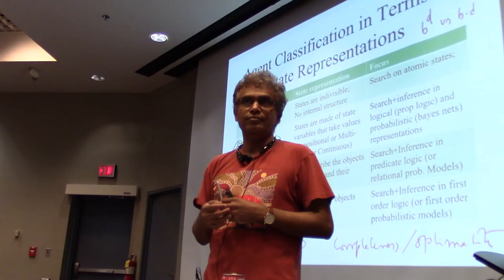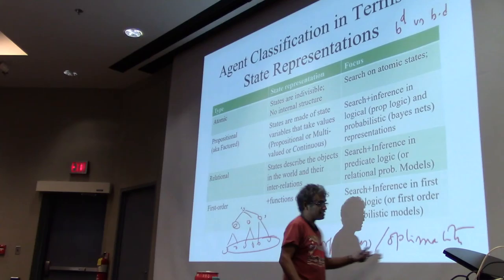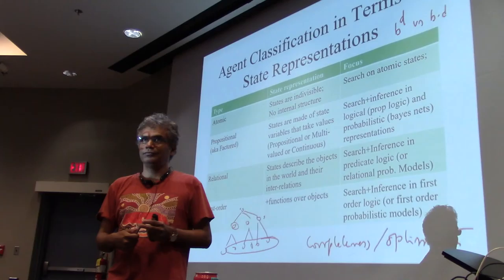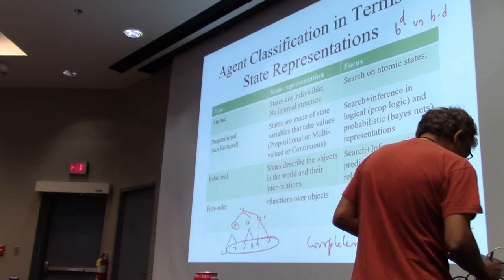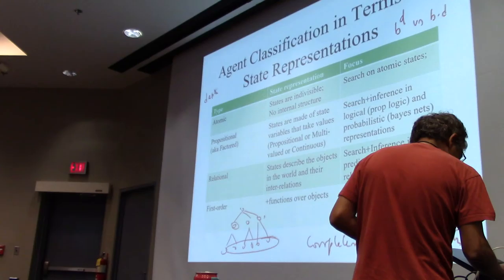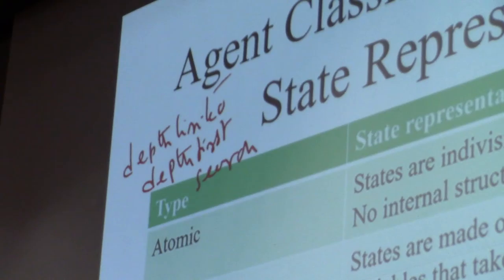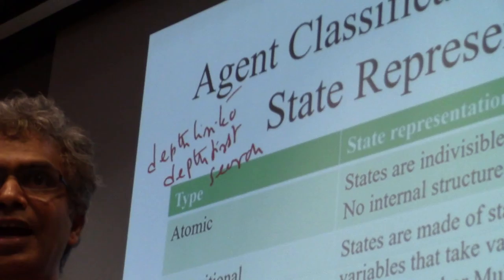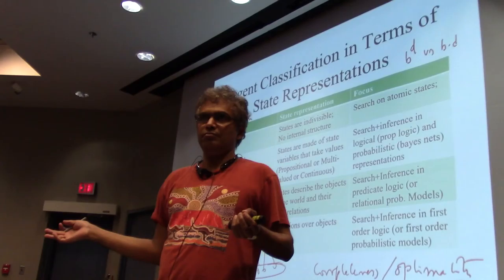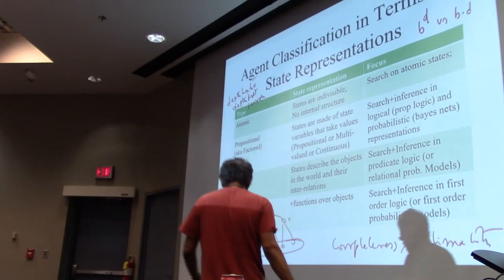Can we have the best of both worlds — the linear memory of depth-first search while having the completeness guarantees of breadth-first search? The key terms here are completeness — if there is a solution at some finite depth, will the algorithm stop and find it? — and optimality — when it finds a solution, is it guaranteed to be optimal? Breadth-first provides both; depth-first provides neither.